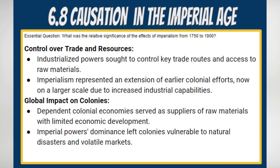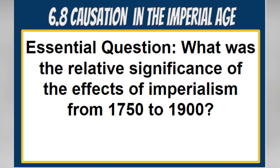Key takeaways. The imperialism of 1750 to 1900 was deeply rooted in the economic realities of industrial capitalism. The pursuit of overseas expansion for resource acquisition and market dominance had far-reaching consequences, shaping global trade relationships, economic structures, and the geopolitical landscape of the time. The echoes of this era continued to reverberate in the modern world, underscoring the complex interplay between economic imperatives and geopolitical ambitions. Now you should be able to answer the essential question: what was the relative significance of the effects of imperialism from 1750 to 1900?